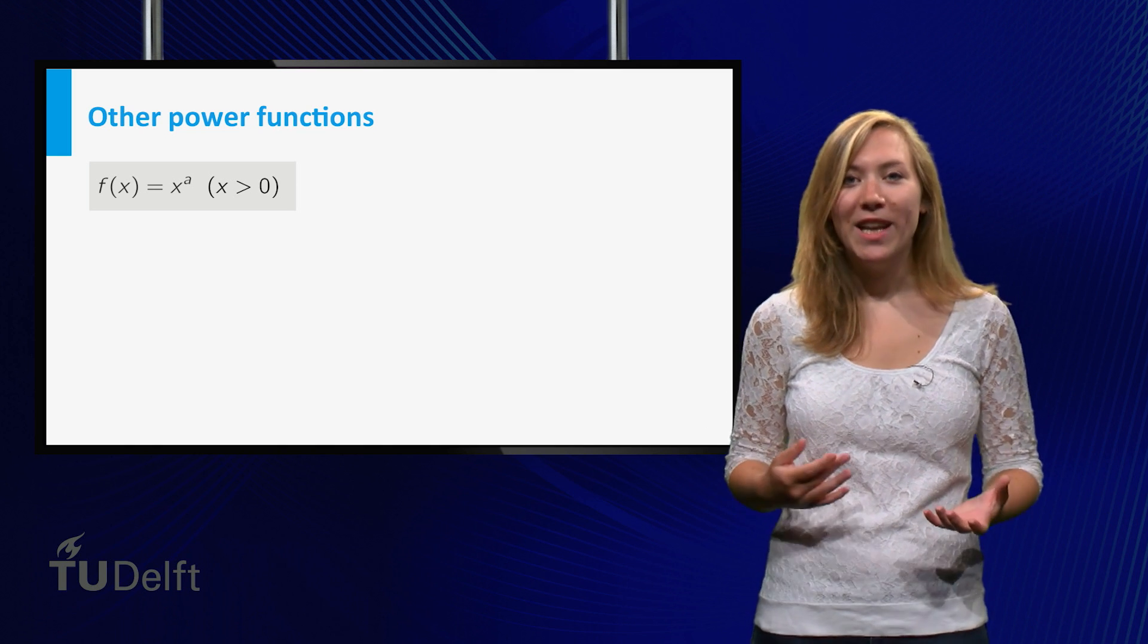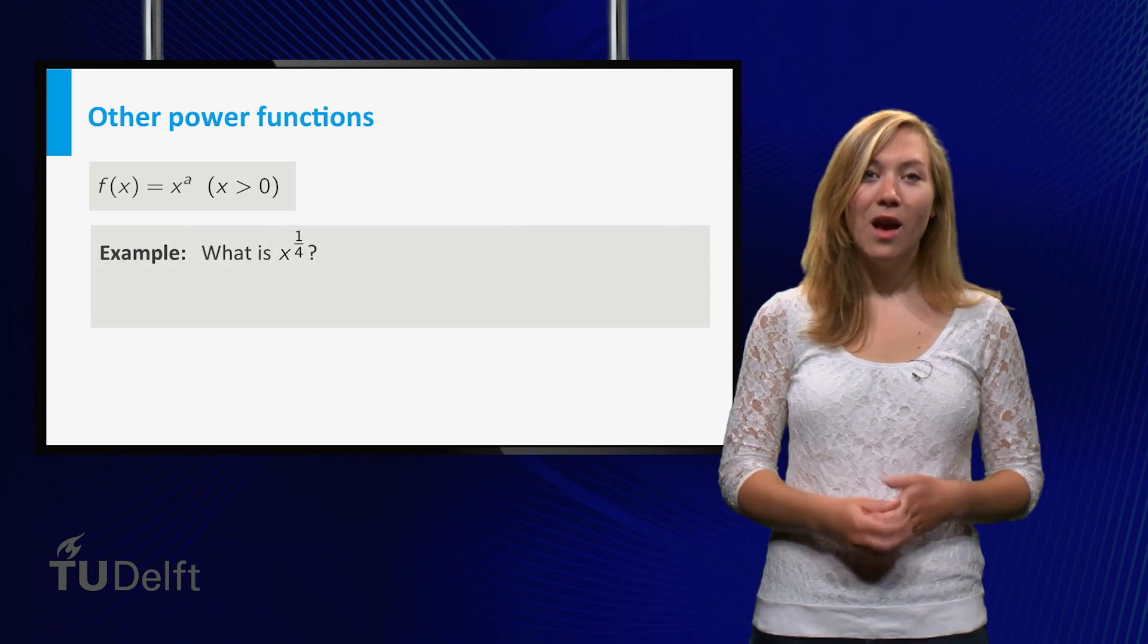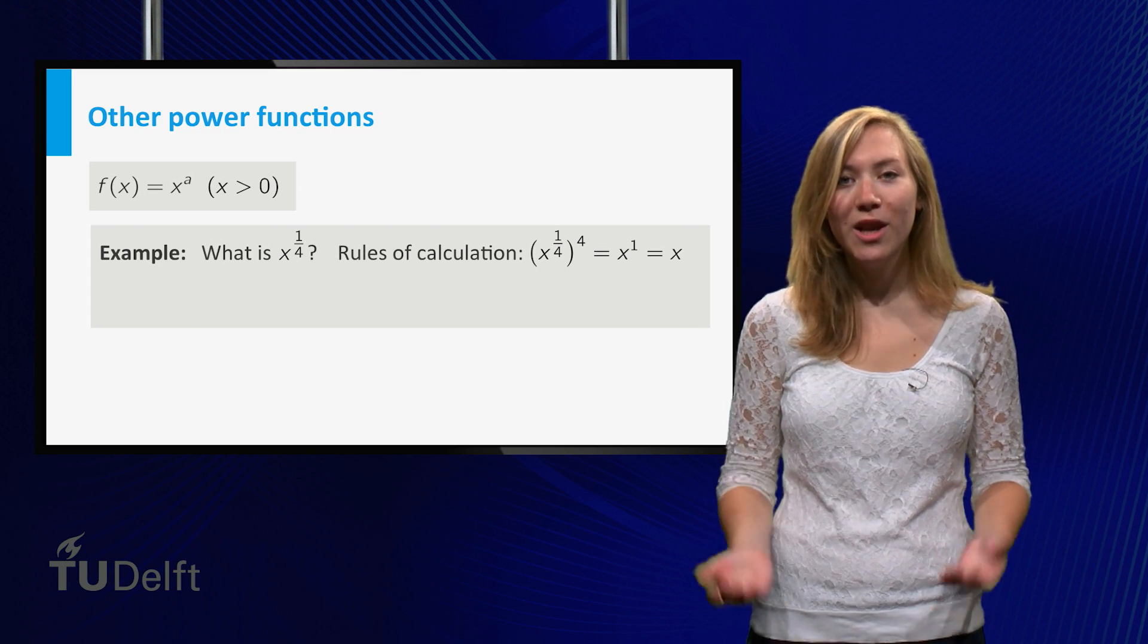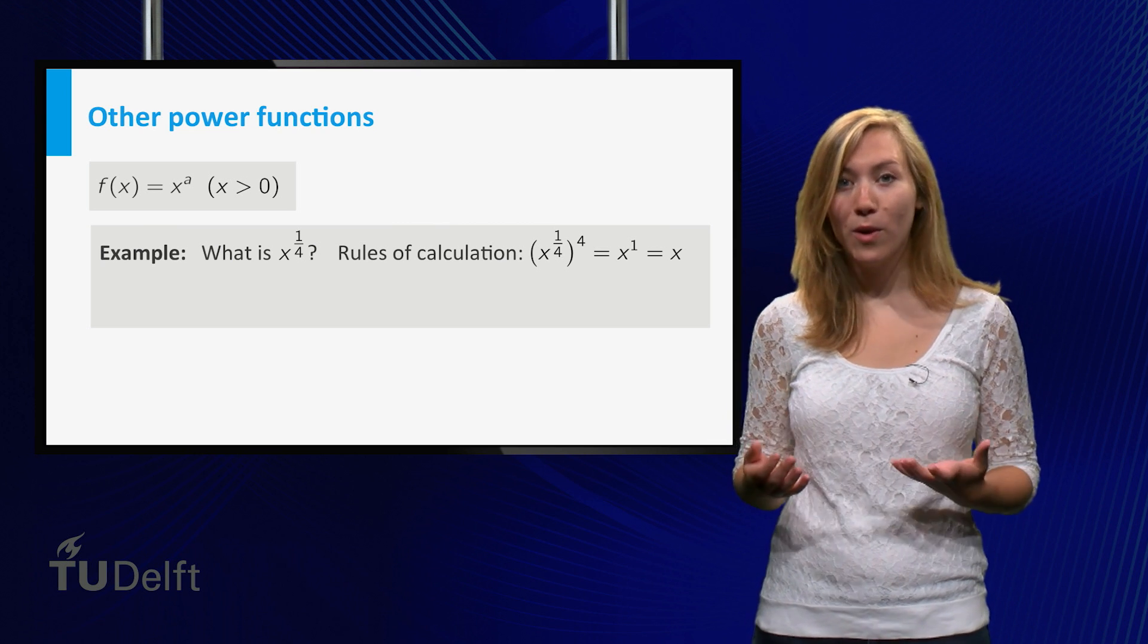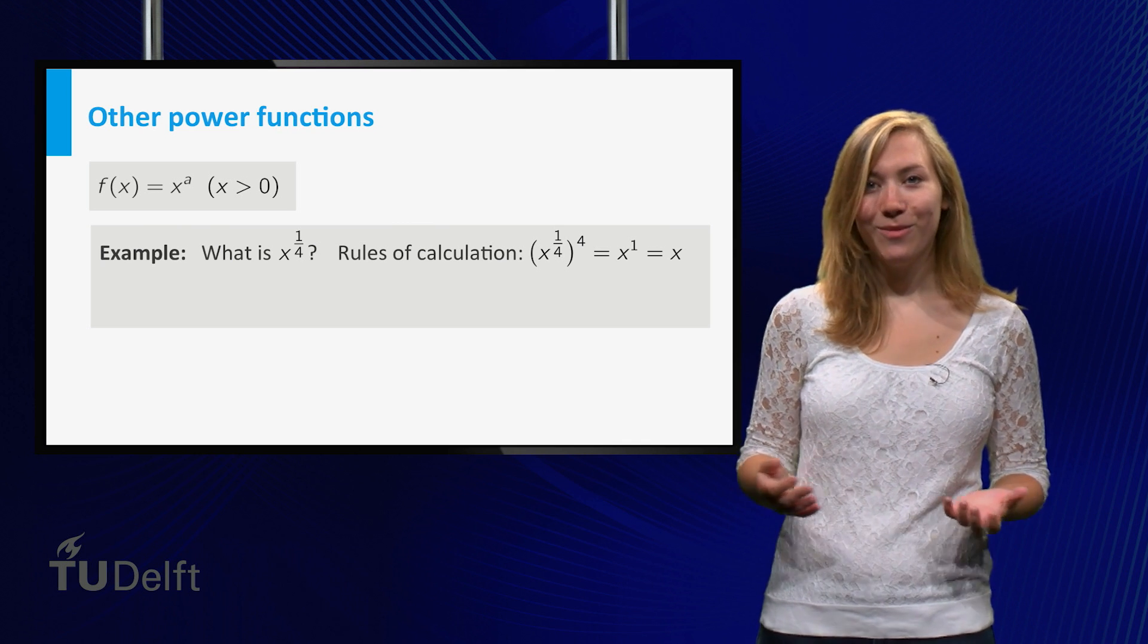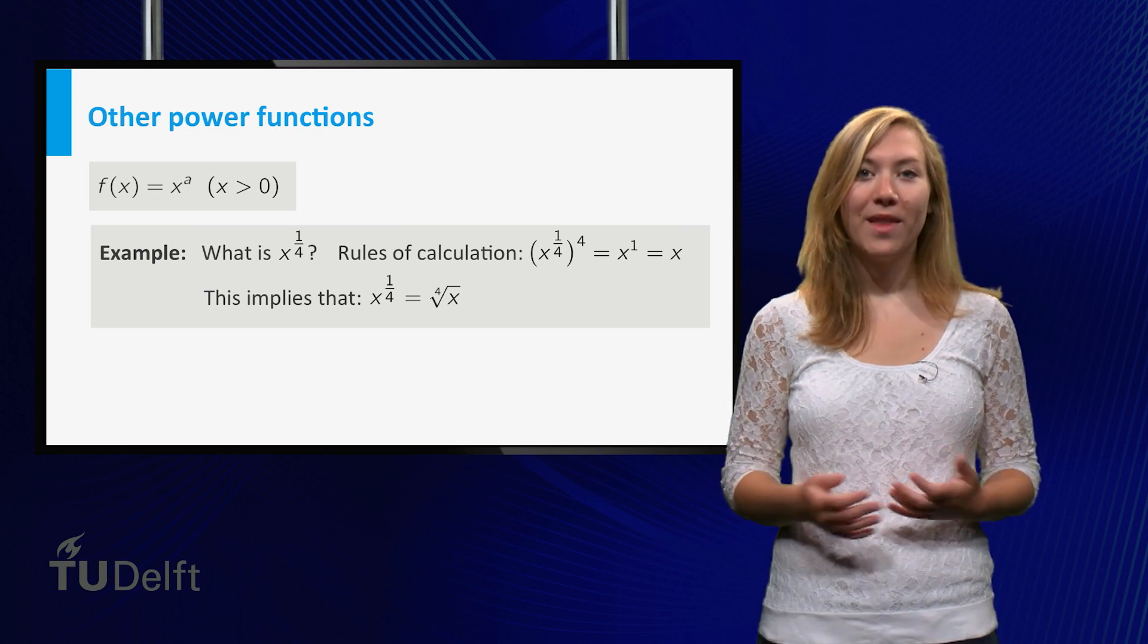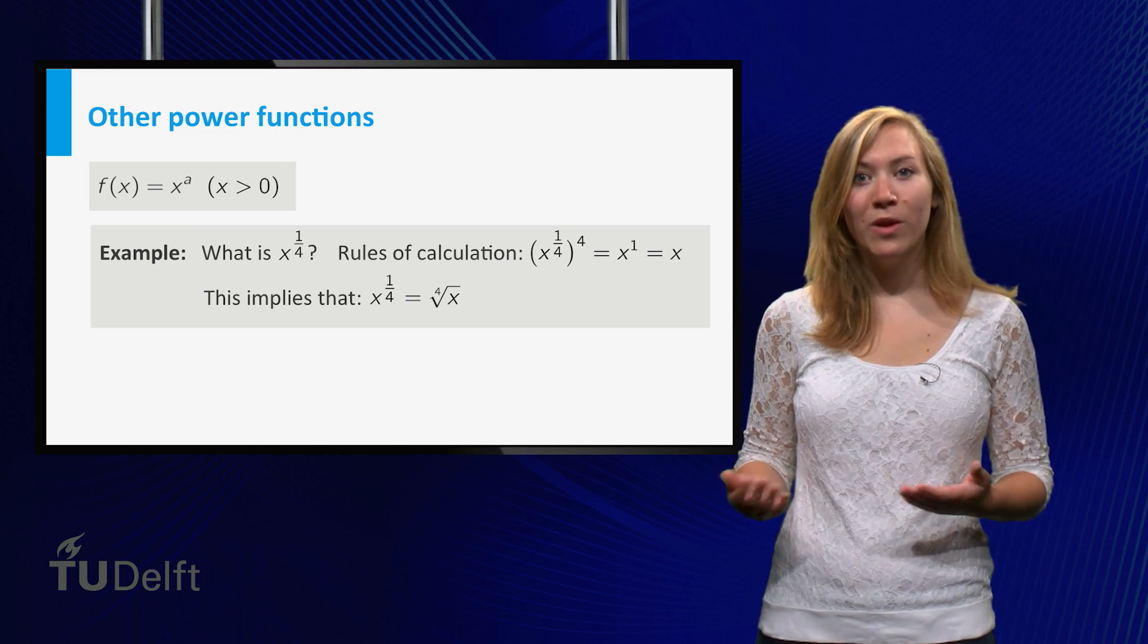We can use the rules of calculation to define the power function when a is a fraction. For example, what should x to the power 1 over 4 be? Well, according to the rules of calculation we should have that x to the power 1 over 4 to the power 4 is equal to x to the power 1, which equals x. We define x to the power 1 over 4 to be the positive number which has x as fourth power. That is, x to the power 1 over 4 is the fourth root of x.